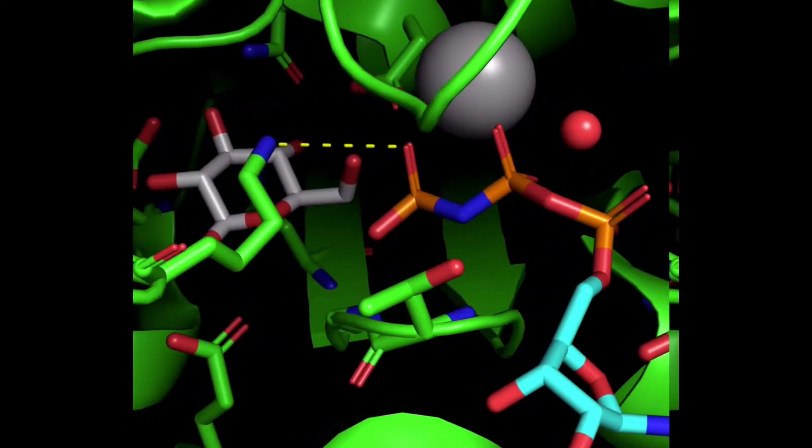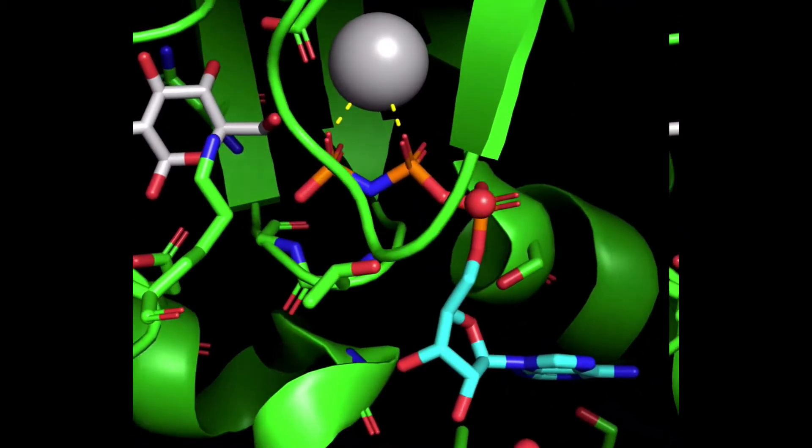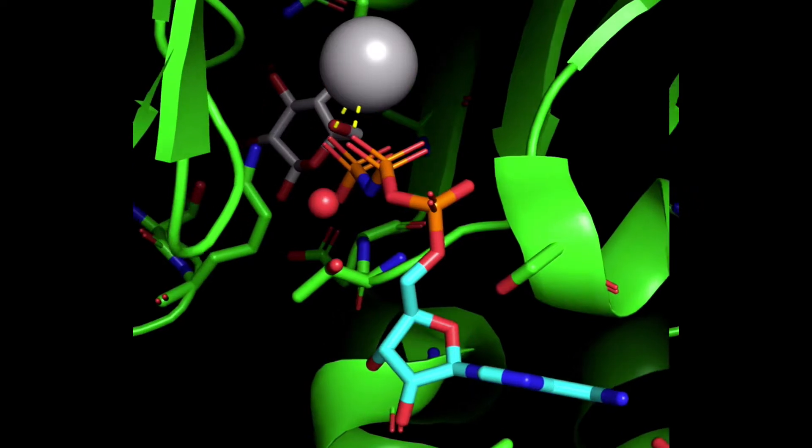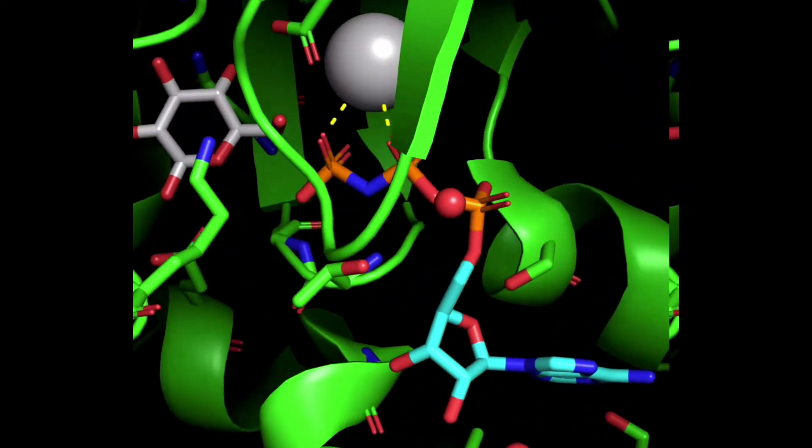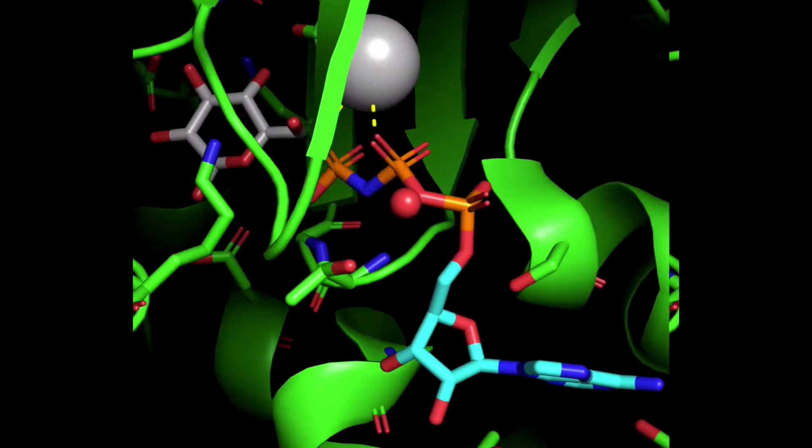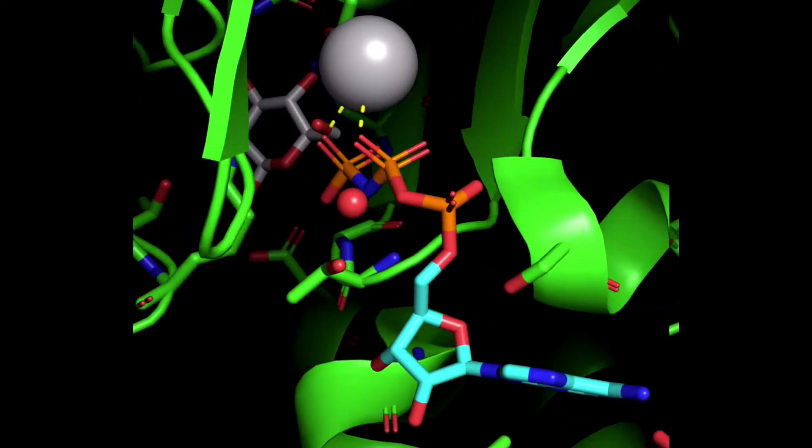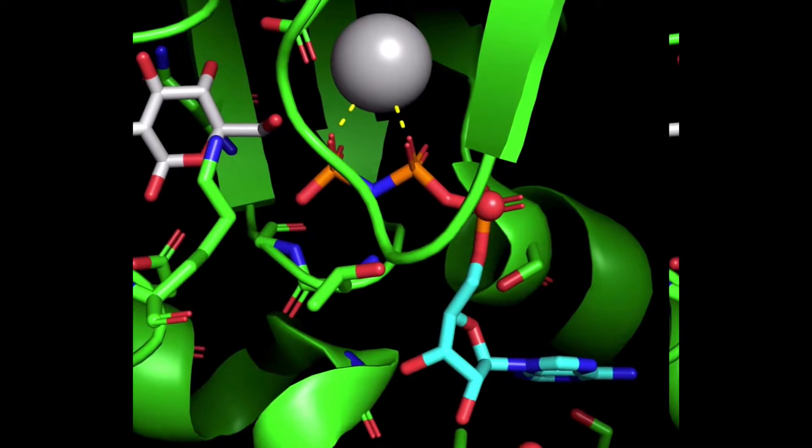But wait a second, there's also this gray sphere. That's a magnesium ion. Hexokinase requires that ATP bind with magnesium to perform the reaction. Magnesium is an enzyme helper, and that's why it's important to have in your diet. The metal has a 2+ charge, and this interacts with the negative charges on the phosphate oxygens, which helps it bond to glucose.